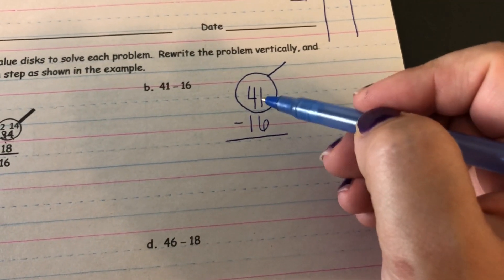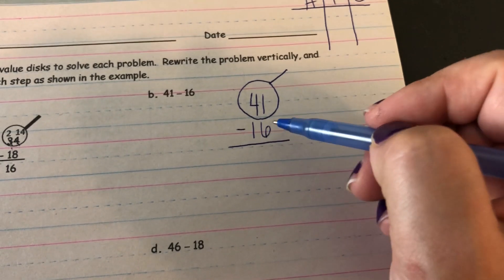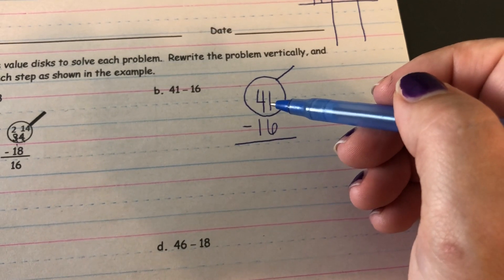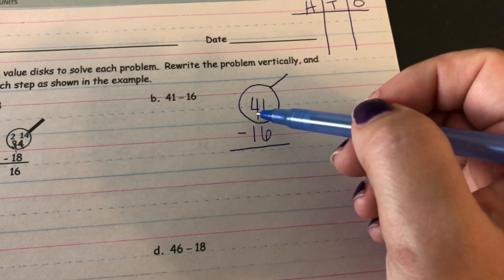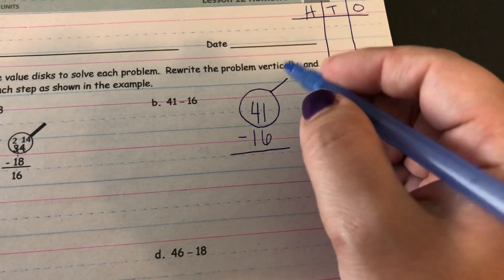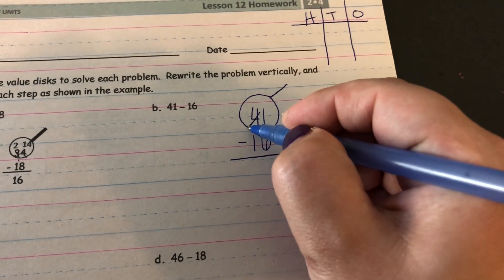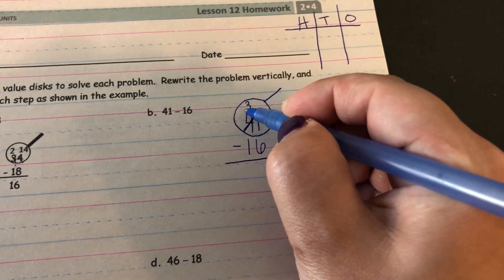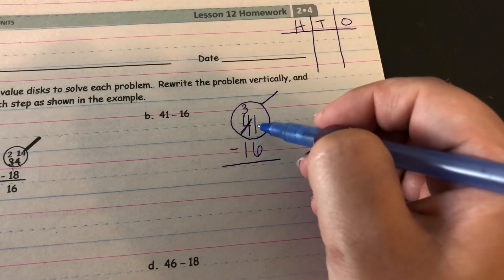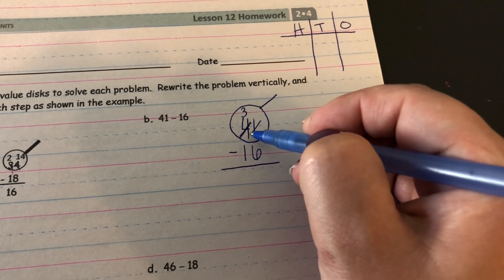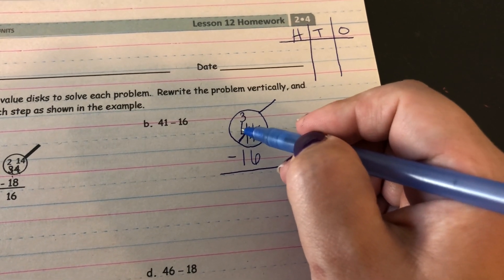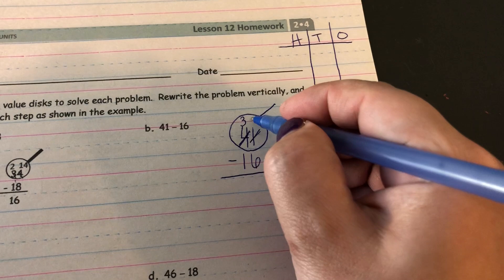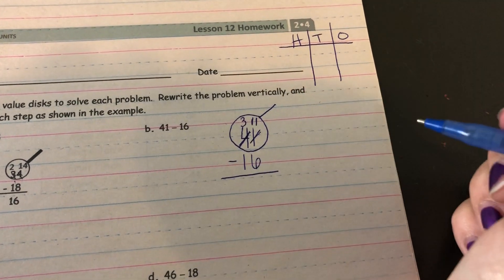Can I take six ones away? No, I cannot. It's not enough ones. So I need to unbundle a 10. I had four 10s but I need to borrow one of those. So now I have three 10s. I had one one but I am getting 10 more ones from the 10. So 10 plus 1 gives me 11 ones.